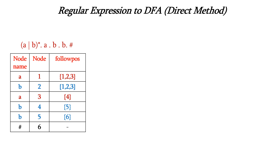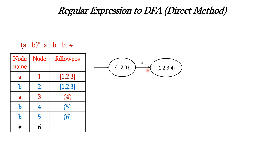Now we construct the DFA. We start with the state {1,2,3} as the starting state, since firstpos of the root's left child gives us that. On input A: nodes 1 and 3 are A, so we union their followpos — {1,2,3} ∪ {4} = {1,2,3,4}. On input B: node 2 is B, its followpos is {1,2,3}, so state {1,2,3} on B goes back to itself {1,2,3}.